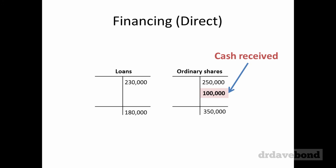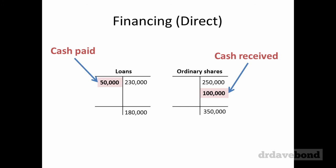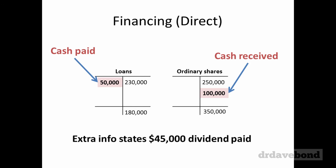That gives you cash received from share issuance. On loans, $230,000 starting doesn't equal $180,000 ending, meaning we need a $50,000 debit — so credit cash $50,000, meaning cash went out. Additional information in the question states there was a $45,000 dividend paid — that's given directly. And that's your financing cash flows done.